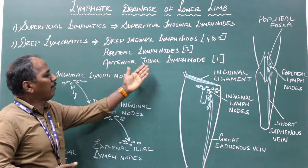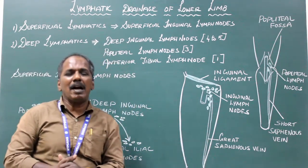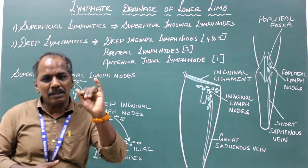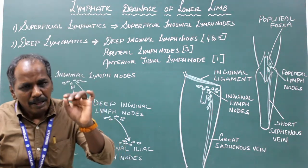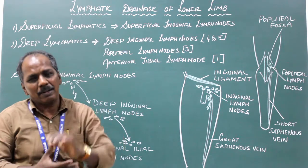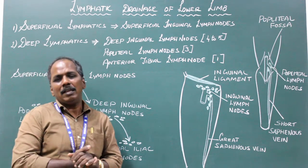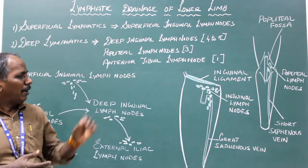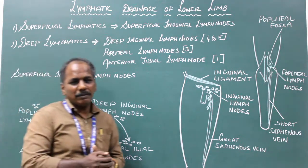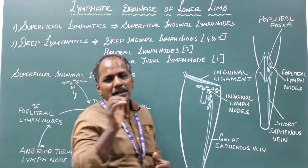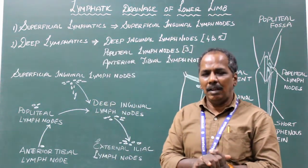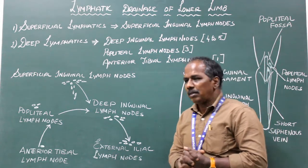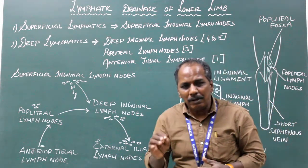The anterior tibial lymph node is occasional. If present, it consists of a single node near the uppermost part of the anterior tibial artery. It drains the lymphatics from the anterior compartment of the leg.